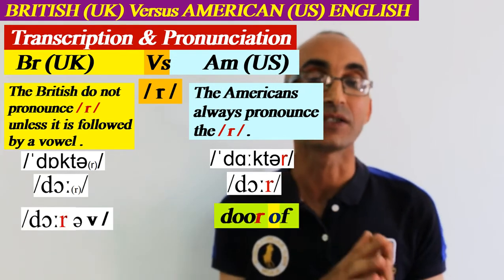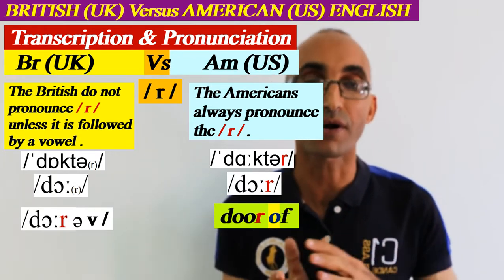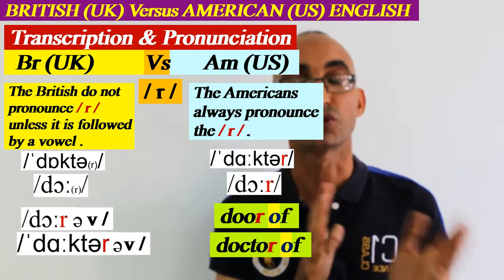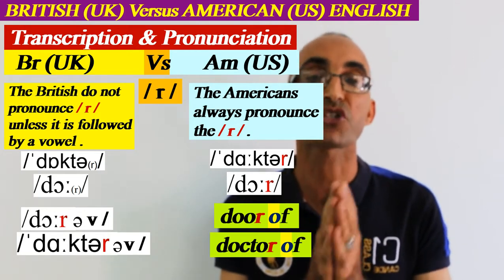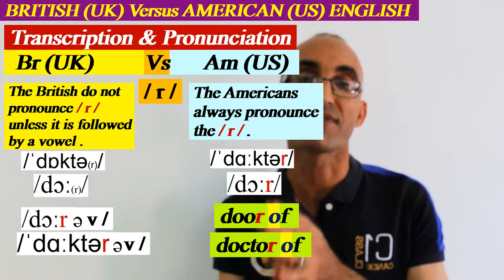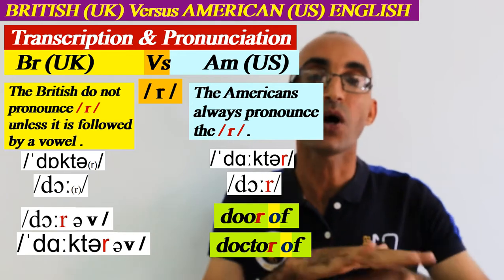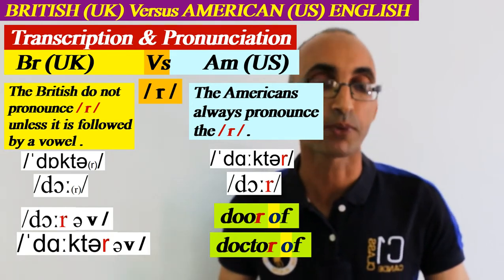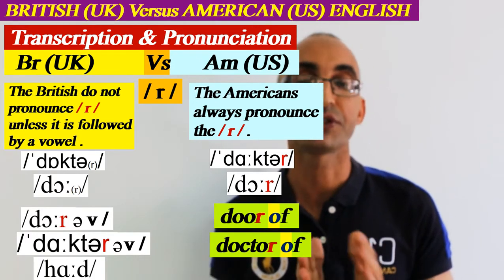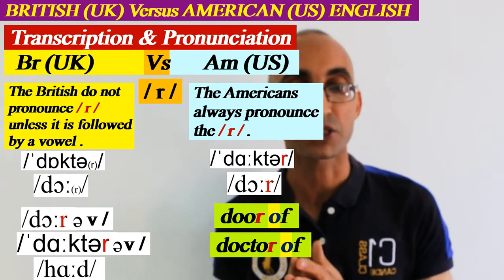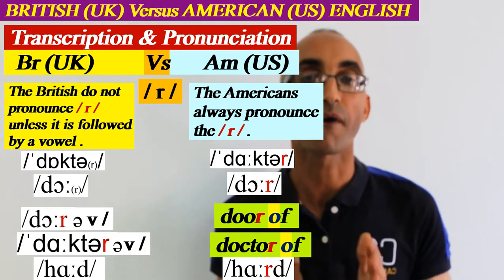However, if followed by a vowel — for example 'door of' or 'doctor of' — the British will pronounce the R in that case. For Americans, they always pronounce it in all situations. Another example: British say 'hard' without stressing the R, while Americans say 'hard' with a strong R sound.